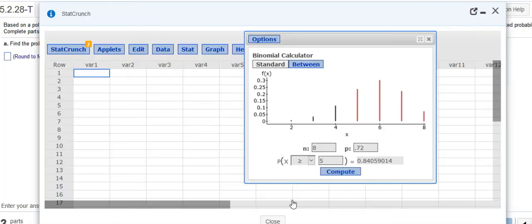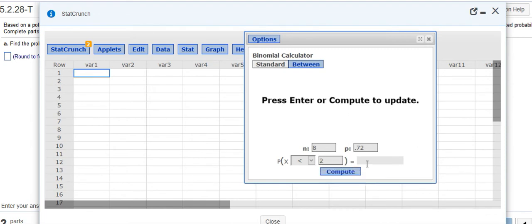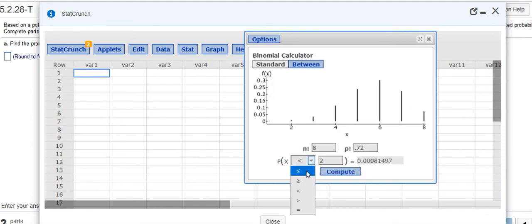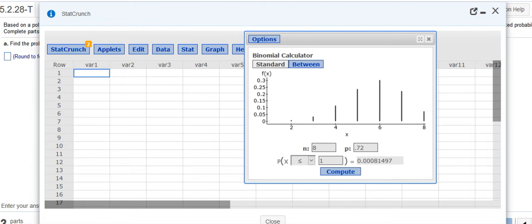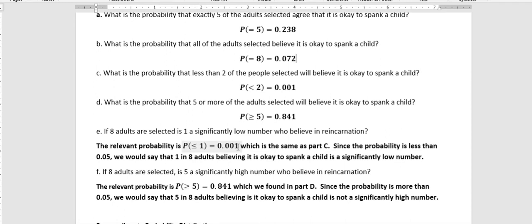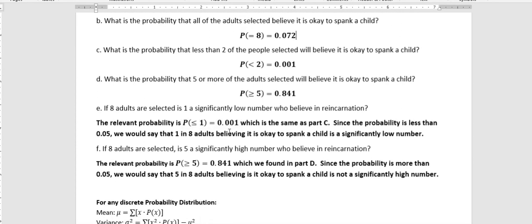When we did is less than two, what are we really talking about? We're talking about 0 and 1. Those are the two numbers that are less than two. But if we did less than or equal to one, that's the same thing. So that's the relevant probability is less than or equal to one. And if you look at that, 0.001, it is the same as part C. And since the probability is less than 0.05, we would say that one in eight adults believing it's okay to spank a child is a significantly low number because the probability is less than 0.05.